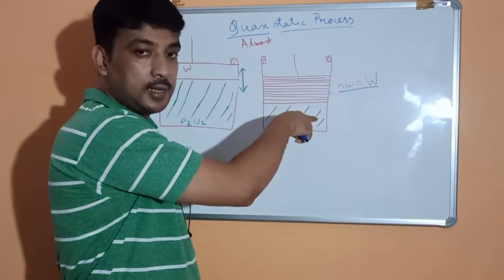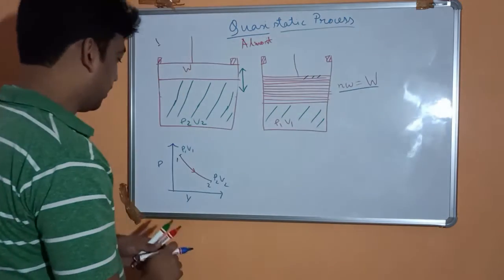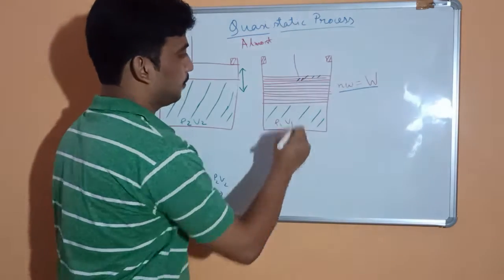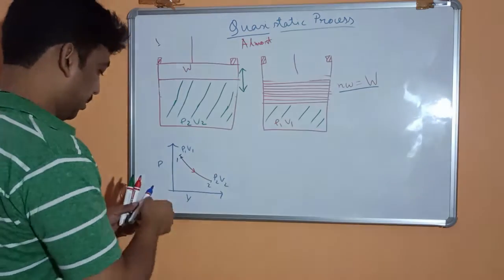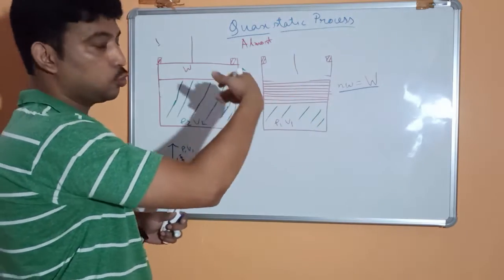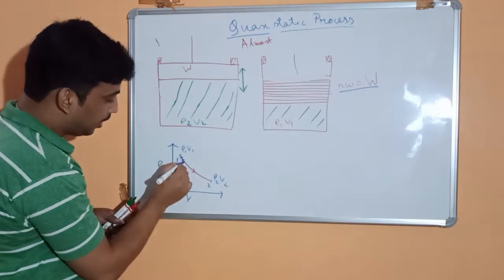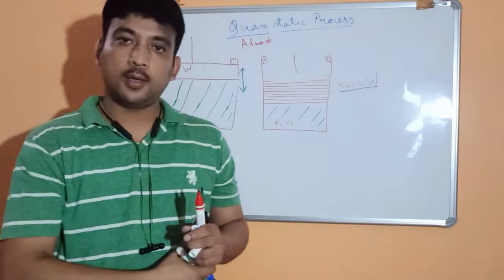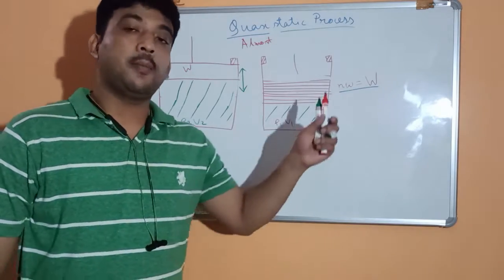Instead of releasing the load all at once, in this second case we remove the loads one by one. Removing the first small load moves the gas to a new position, then removing the second moves it further. Continuing this way, instead of having two equilibrium points like the previous case, we now have n number of equilibrium points.